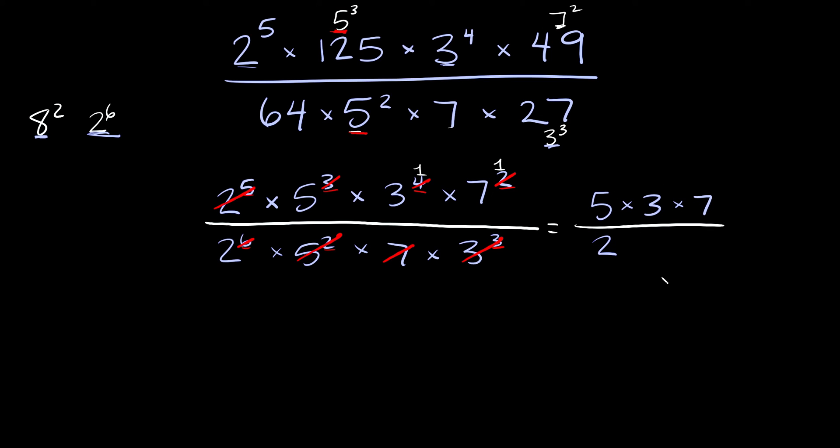So then all we're left with is 5 times 3 times 7 over 2 and 5 times 3 times 7 equals 105. And then we're still dividing by 2 and 100 divided by 2 is equal to 52.5.